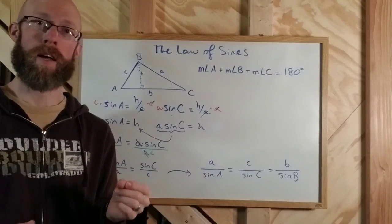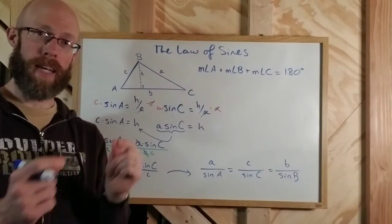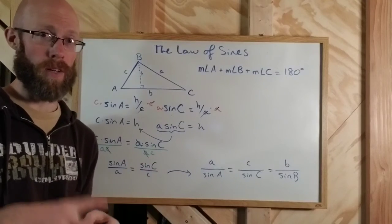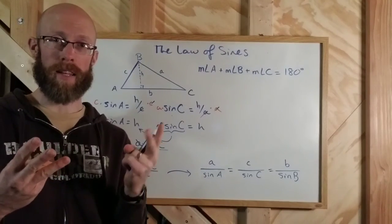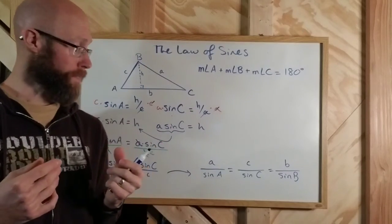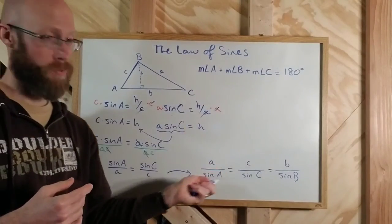But any other three pieces of information, you then should be able to find the other three pieces of information. So, if I give you two sides and an angle, you should be able to find the other side and the other two angles. Okay? Using this formula and this formula.